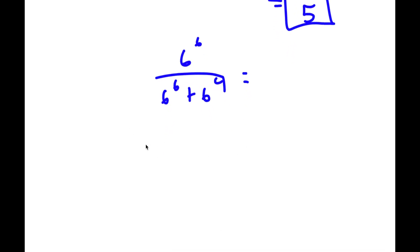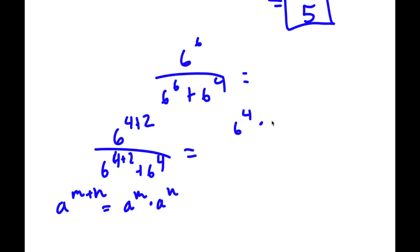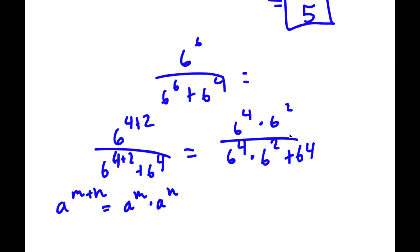Alright, so now to solve this problem, I am first going to write 6 to the power of 6 as 6 to the power of 4 plus 2. I'm going to rewrite 6 to the power of 6 in our denominator again as 6 to the power of 4 plus 2, and we have 6 to the power of 4 here. Now remember our property: a to the power of m plus n equals a to the power of m times a to the power of n. So 6 to the power of 4 plus 2 equals 6 to the power of 4 times 6 squared. The same applies in the denominator, giving 6 to the power of 4 times 6 squared, plus 6 to the power of 4.